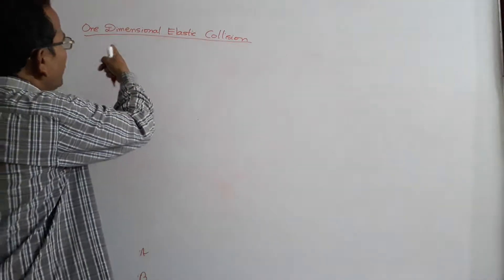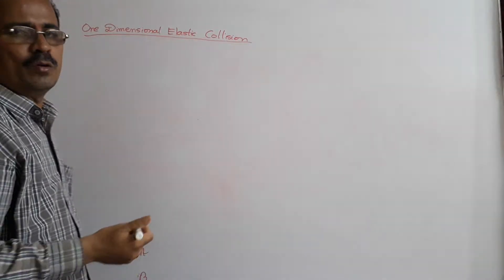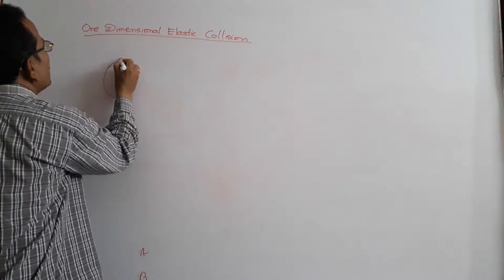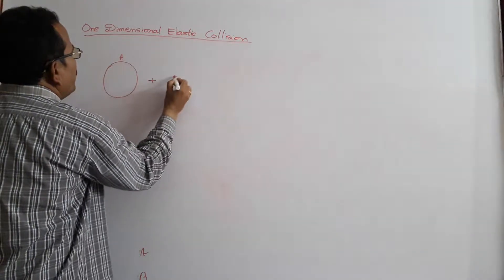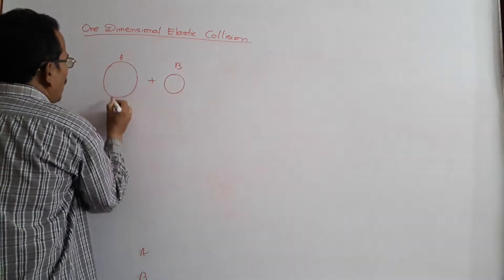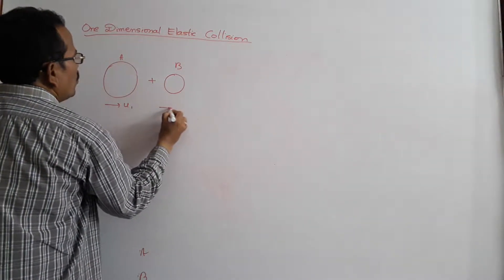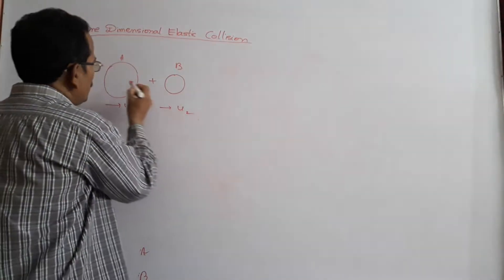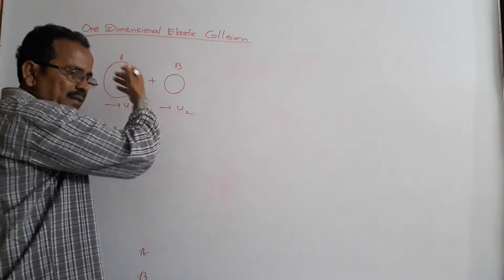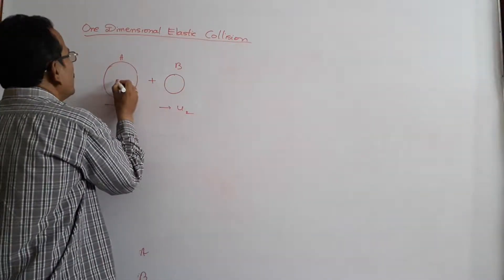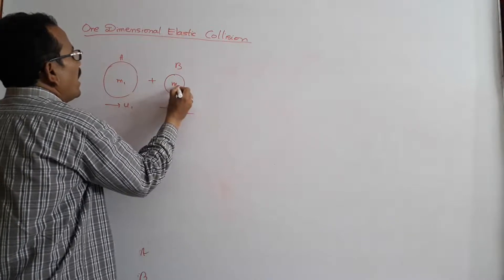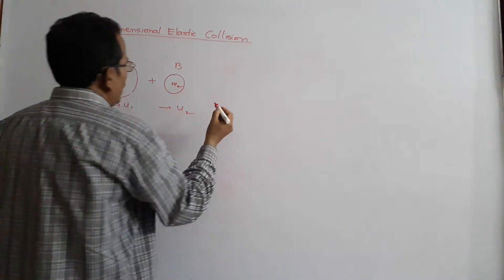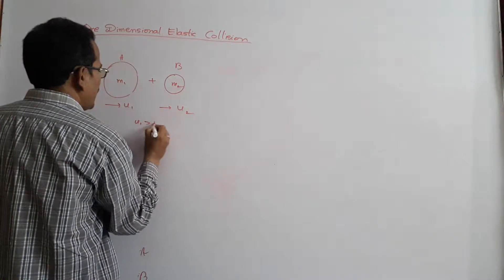Now, one-dimensional elastic collision. Consider two smooth spheres A and B. These two are moving with velocities U1 and U2 along the line joining their centers in the same direction. Their masses are M1 and M2. These two are non-rotating spheres. U1 is greater than U2.